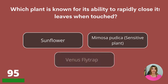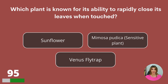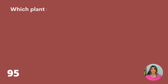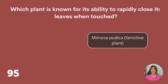Which plant is known for its ability to rapidly close its leaves when touched? The sunflower, the Mimosa pudica, or the Venus flytrap? The Mimosa pudica.